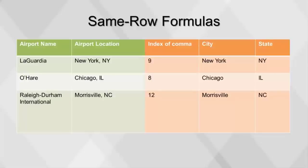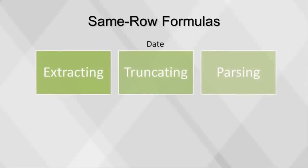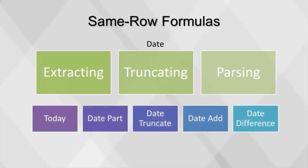We can also use formulas for extracting, truncating, and parsing date parts from a date field. A date or date-time field carries more information than a typical variable, such as the time of day, the day of week, the day of month, the month of year, the year number, and the difference in the date from other dates. The most heavily used date functions are: today, used to get today's date; date part, used to get a part of a date; date truncate, which returns a date at the beginning of a period; date add, which adds or subtracts a number of periods to a date; and date difference, used to calculate the number of periods between two dates.